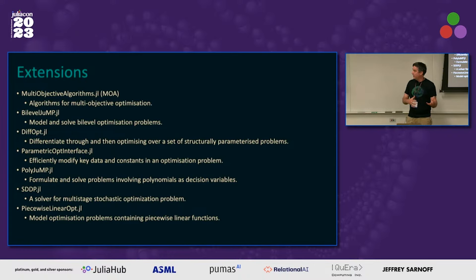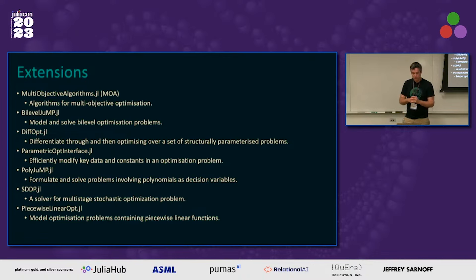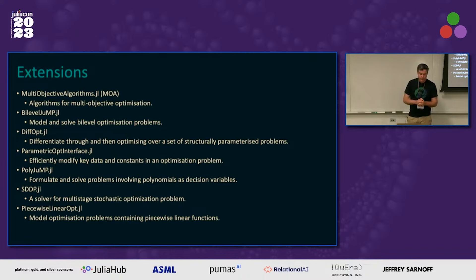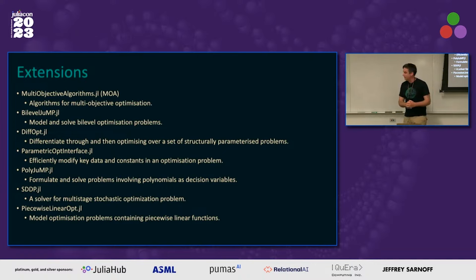I'd be remiss not to mention things that aren't necessarily in the JuMP documentation directly, but are extensions you may not be aware of. Multi-objective optimization now lives in the Multi-Objective Algorithms package (MOA). There's a more extensive bi-level optimization package beyond the simple example, called BiLevel.jl. We have DiffOpt to differentiate through optimization problems over structurally parameterized problems. ParametricOptInterface to efficiently modify key parameters and constants. PolyJuMP for polynomials as decision variables. Oscar's package SDDP for multi-stage stochastic optimization. And PiecewiseLinearOpt for modeling problems containing piecewise linear functions.